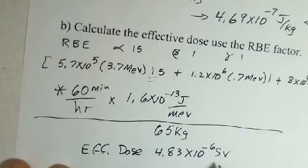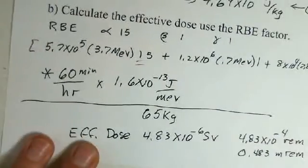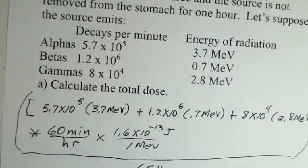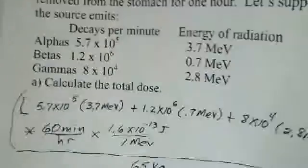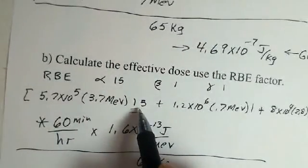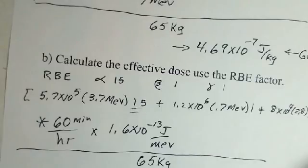If you want this in rems, it's 100 times larger: 4.83×10⁻⁴ rem, or in millirems, 0.483 millirems. So the source I chose was not particularly dangerous — it's not a recommended procedure to swallow radioactive material, but you'd only end up with 0.483 millirems of exposure. To summarize: total dose equals decays times energy per decay, converted to proper time and joules, divided by mass in kilograms. For effective dose, look up the RBE for each radiation type and include that factor in each calculation.